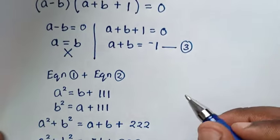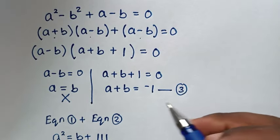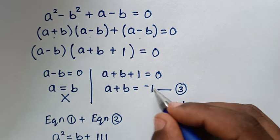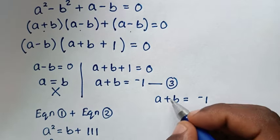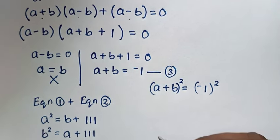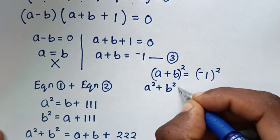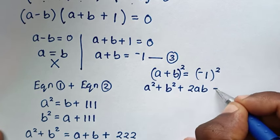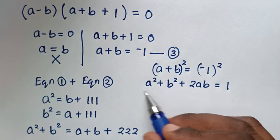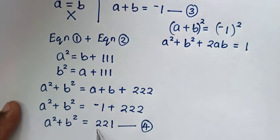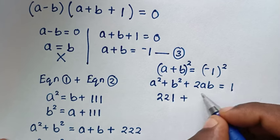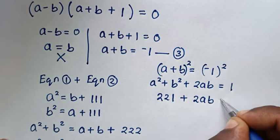Then in the next step, from equation 3, a plus b equals negative 1. We square both sides: (a+b)² gives a squared plus b squared plus 2ab equals negative 1 squared, which is 1. From equation 4, a squared plus b squared equals 221, so substituting: 221 plus 2ab equals 1.